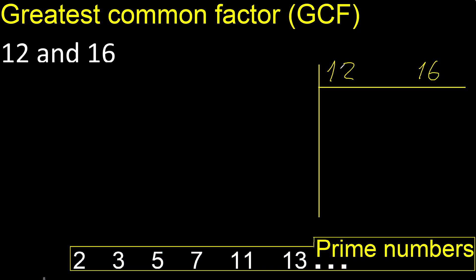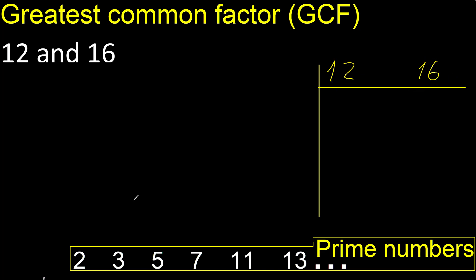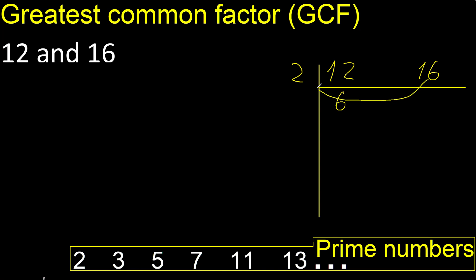Can 12 and 16 be divided by 2? Yes. Therefore, 12 divided by 2 is 6, and 16 divided by 2 is 8.